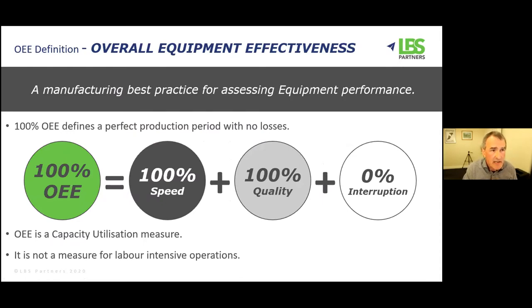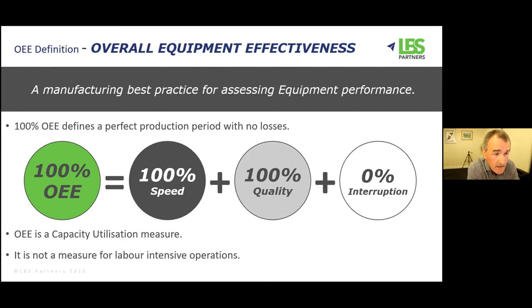Starting off, let's understand what overall equipment effectiveness is. We're trying to define 100% OEE — the perfect day from the machine's point of view. That is the machine running at 100% of its speed — not faster, not slower — 100% of the speed the machine was designed to run at. We're running defect-free; the machine is not creating any rejects. We have 100% quality, and during that shift we have zero interruptions — no jams, no breakdowns. So: 100% speed, 100% quality, and no stops.